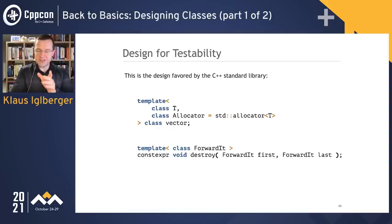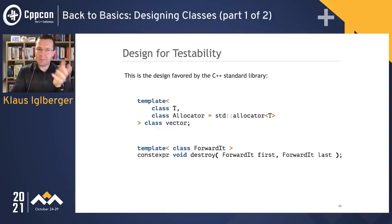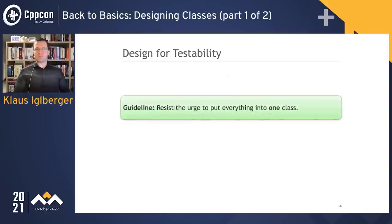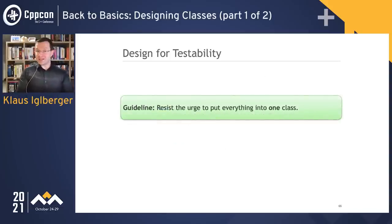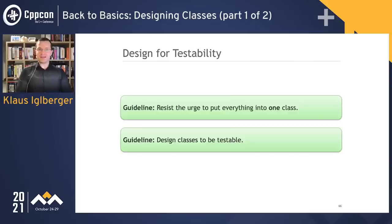You might have realized this is exactly what the standard library does: std::destroy is one of these algorithms. std::vector uses std::destroy because Vector has exactly this idea — it needs to destroy the elements it has created. Destroy can be easily tested, and the two work perfectly together. So resist the urge to put everything into one class in particular, and design classes to be testable.